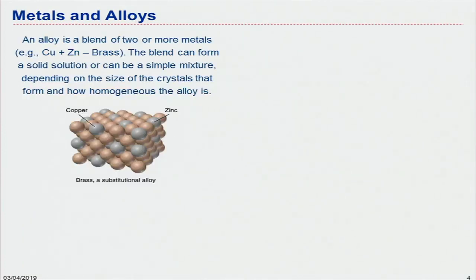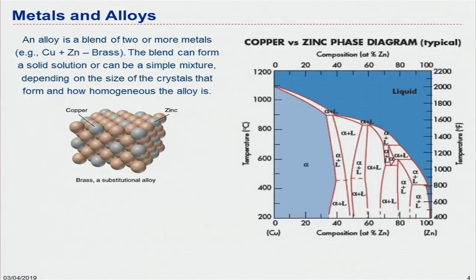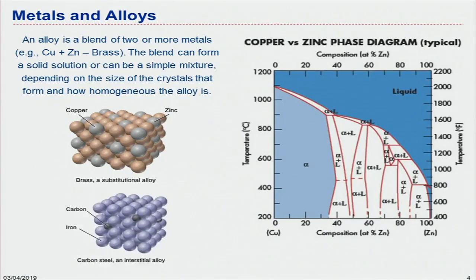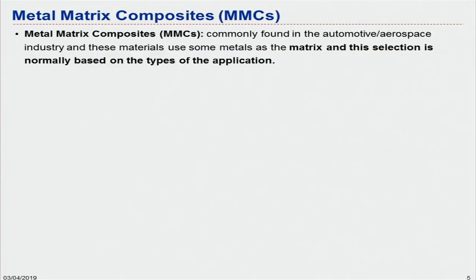One example of a substitutional alloy is brass — copper and zinc. We have done phase diagrams and I hope you are familiar with them. One example of an interstitial alloy is carbon-iron, where small carbon atoms sit within the iron or ferrous atoms — that is an example of an interstitial alloy.